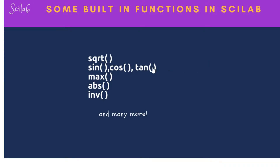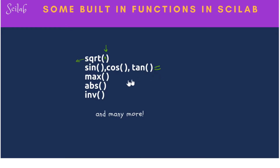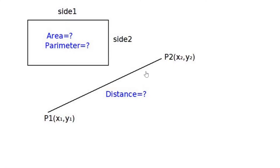Every language has certain built-in functions. Scilab also has many built-in functions like square root, sin, cos, and tan (the trigonometric functions). You give some variable or value x and get the square root back. You can also get the maximum of any vector or matrix, the absolute value, and the inverse of a matrix or a single number. There are hundreds of functions in Scilab.